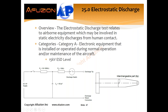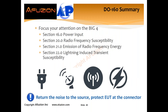Summary of DO160: focus your attention on the big four — power input, RF susceptibility, RF emissions, and lightning-induced transient susceptibility. The key takeaways for all four sections are similar: return the noise to the source. If that source is internal and it's a clock, make sure you have proper decoupling. If it's a switch mode power supply, make sure current loops are really small. And protect the EUT at the connector, whether that's a lightning event or protecting from RF susceptibility. With that, I'll pass it back to Vance for the quiz answers.